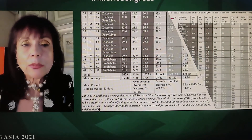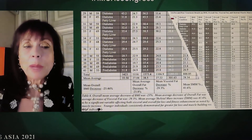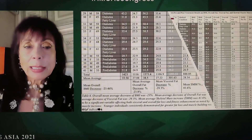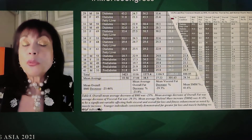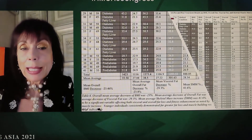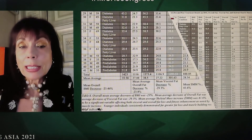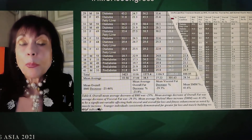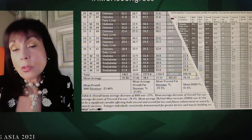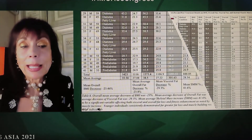There were several studies involved in this. We found a BMI decrease of 23.46%, overall fat decrease of minus 23.8%, mean visceral fat decrease of minus 29.3%, and mean skeletal muscle increase of 41.6%.